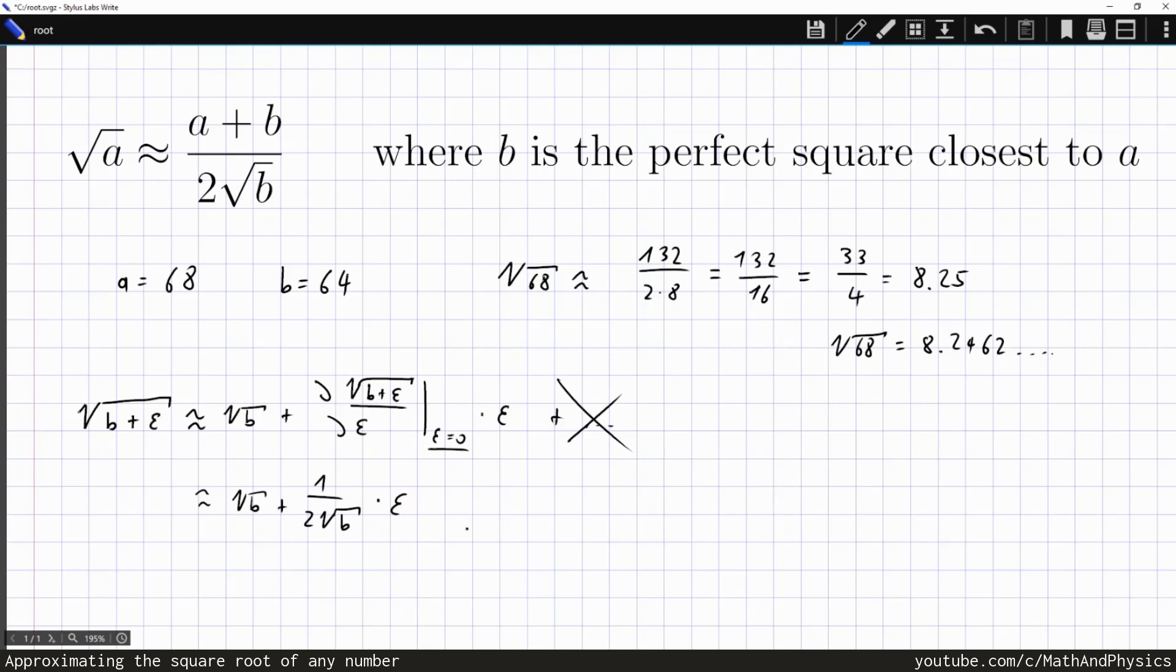Now what is epsilon in our case? What we actually care for is the square root of a, and not the square root of b. But the square root of a is nothing but the square root of b plus a minus b. And we assume that this a minus b is our small number epsilon. Now you can see the number is smaller the closer a is to the closest perfect square b. So the smaller this number is, the better the approximation will be. And this is exactly what we saw in the graph earlier.